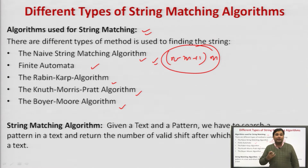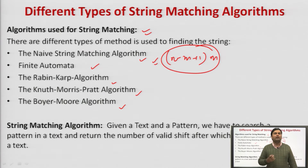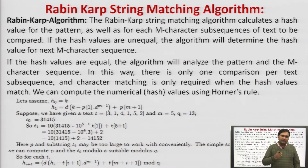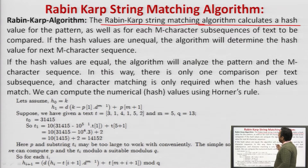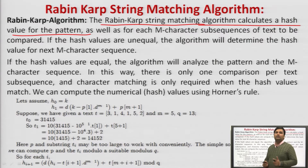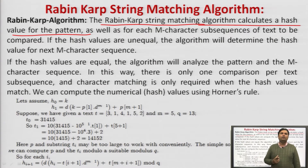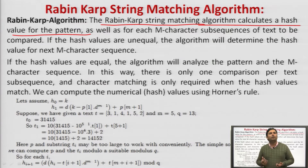Now, how the Rabin-Karp algorithm works in string matching — how it reduces the complexity, how it provides a more secure system — this we will see. First we will see the basic definition of Rabin-Karp algorithm. Then we will see how it differs from naive, because the Rabin-Karp string matching algorithm calculates a hash value for a pattern. It calculates the hash value of a pattern in order to provide a more secure function.